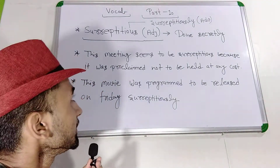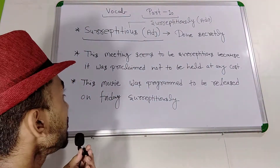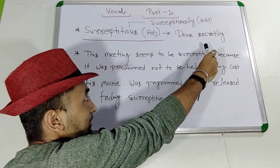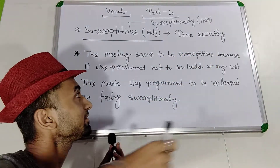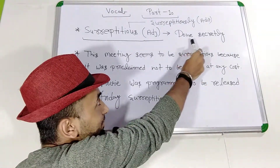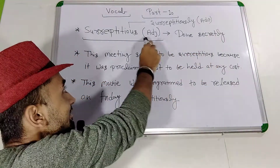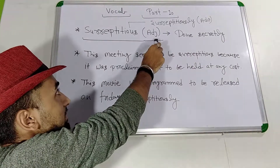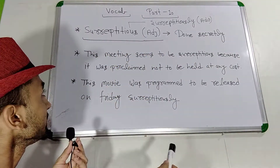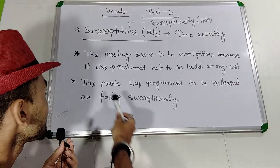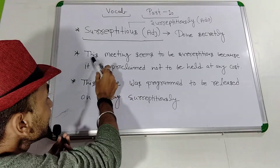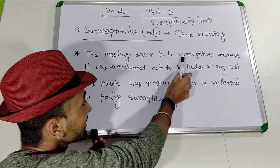The meaning of this word is done secretly — means to do something without others knowing. This is an adjective, and there are some examples. I'm going to take the first one: 'This meeting seems to be...'